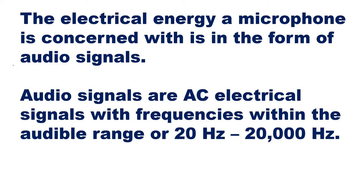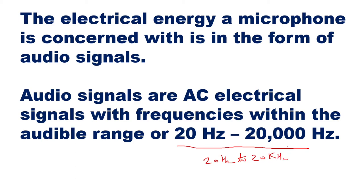The audible frequency range of 20 Hz to 20 kHz is the range within which signals can be heard by a human being. This is a limitation with respect to a human being — they can hear signals only within this frequency range. Now we will go on to see the features of microphones.